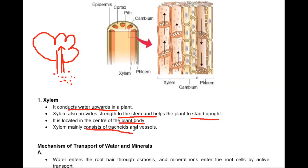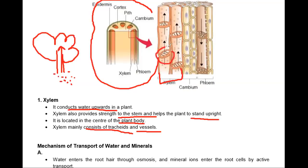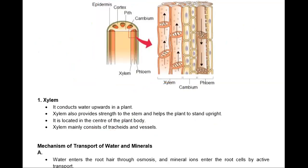Xylem mainly consists of tracheids and vessels, and there is flow of water in the upward direction. Phloem is another conducting tissue. It brings food in all directions — to the leaves, and it is transported to all parts of the plant. Sometimes food is stored in the underground stem, sometimes in fruit, sometimes in roots. So phloem transports in all directions, whereas xylem is unidirectional — upward.